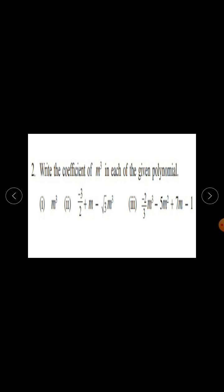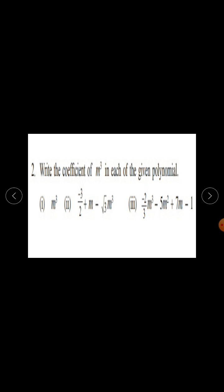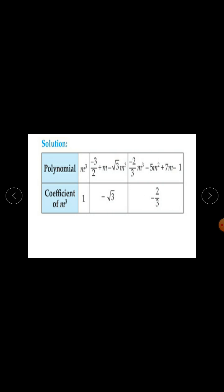Now question number 2: Write the coefficient of m cubed in each of the given polynomials. The polynomials are: first, m cubed; second, minus 3 upon 2 plus m minus root 3 times m cubed; and third, minus 2 upon 3 times m cubed minus 5m squared plus 7m minus 1.